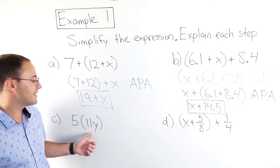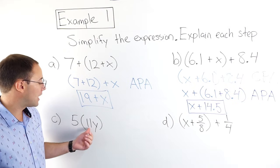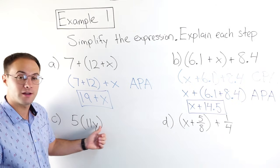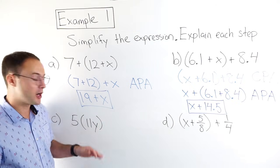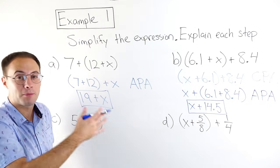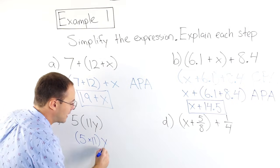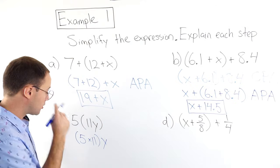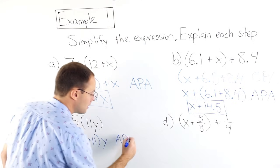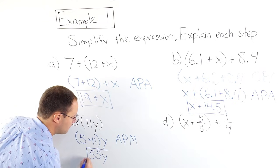Part C: 5 × (11y). Remember, a number next to parentheses means multiplication, and a number next to a variable also means multiplication — we call that a coefficient. We're only multiplying here, so I can change the grouping: (5 × 11) × y. That's the associative property of multiplication. Five times 11 is 55, so the answer is 55y.